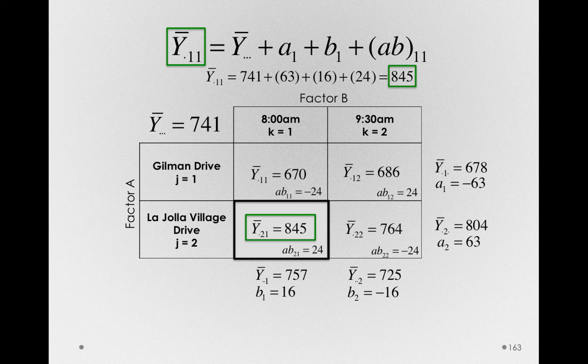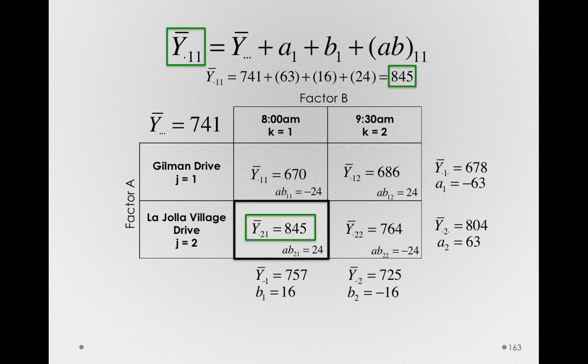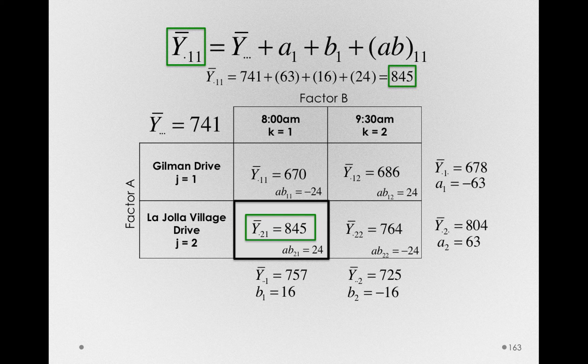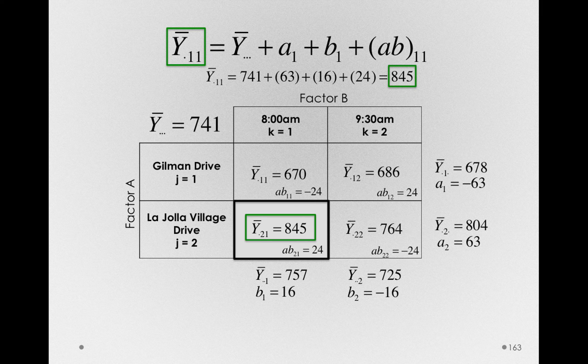So all we've done is broken apart these different group means into common effects. A common effect due to factor A, a common effect due to factor B, and then that interaction offset, the degree to which the mean of that group isn't just the sum of those independent marginal effects.